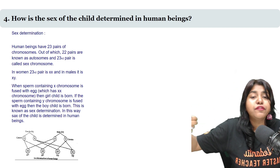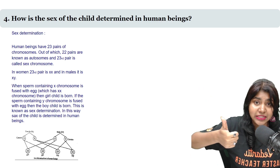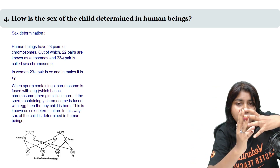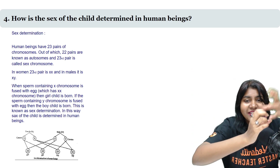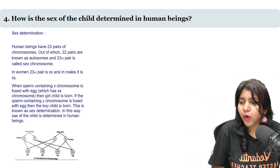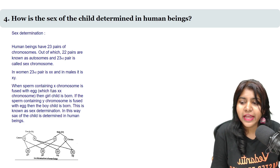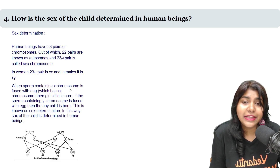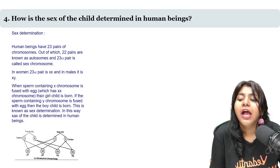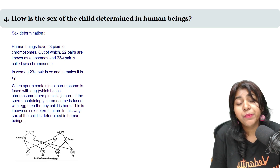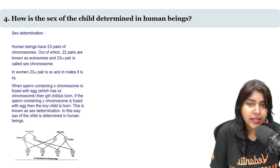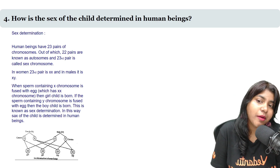The female has XX sex chromosomes and the male has XY. The sex is determined by whether the child inherits X or Y from the father. There is a 50% probability of being female and 50% probability of being male.